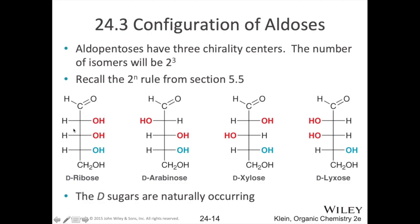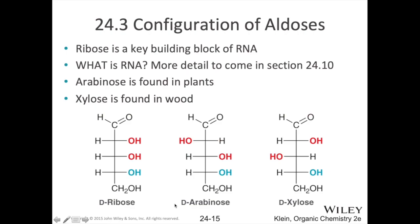Next up we have aldopentoses — aldehyde groups at the end and five carbons, giving us three chiral centers and eight different isomers: four D isomers and four L enantiomers. The D aldopentoses are ribose, arabinose, xylose, and lyxose. Ribose is the R in RNA. Deoxyribose — where you remove one alcohol group and replace it with a hydrogen — is the D in DNA. Xylose may also ring a bell as part of the building blocks of wood.